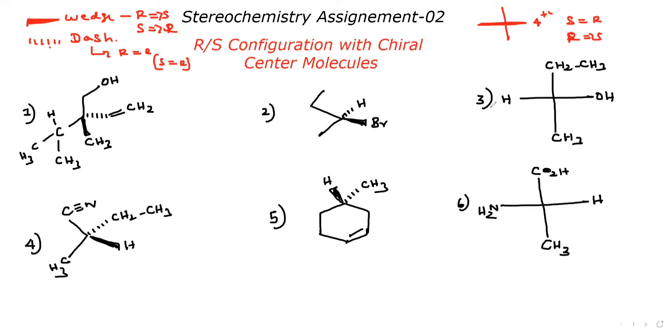These two things we have to know before solving the questions — R/S configuration rules. Let's start the first question. We have to do the numbering for the chiral carbon. This is a chiral carbon.